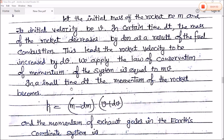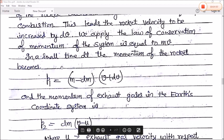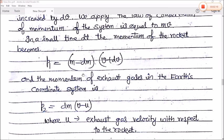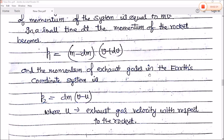In a small time dt, the momentum of the rocket becomes P1 equal to mass. The mass has decreased and the velocity has increased. So now the total mass has become m minus dm, and the velocity is v plus dv.